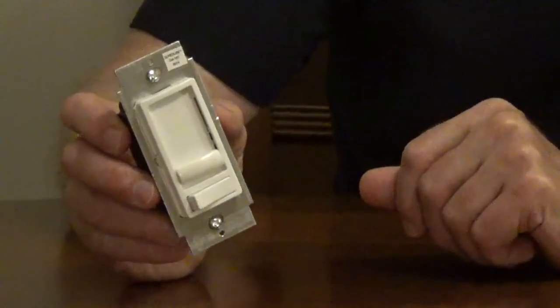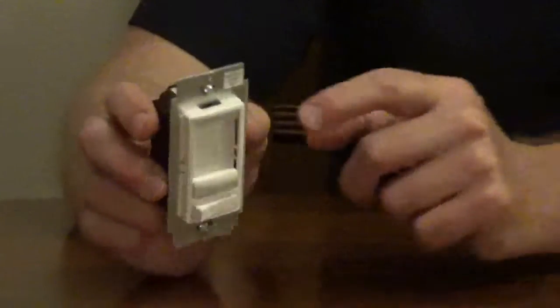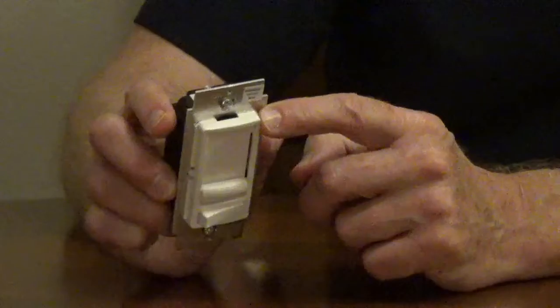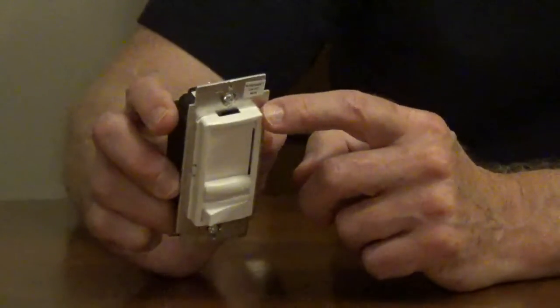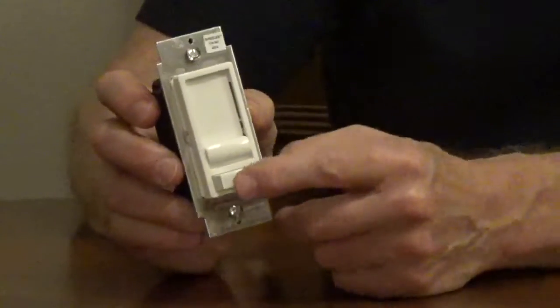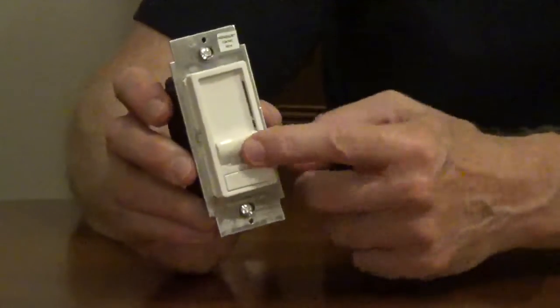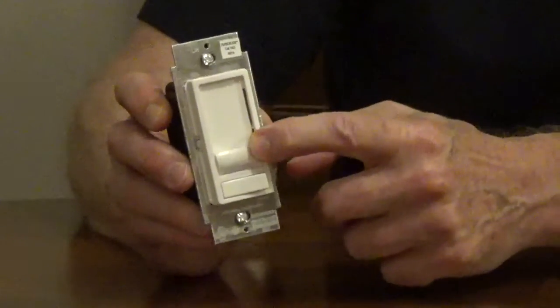This is the Leviton 6674 LED dimmer. On the top, there's a switch with two options, LED or CFL. You want to turn this to LED. You're going to turn off the dimmer, and you want to move this slide to the lowest position.